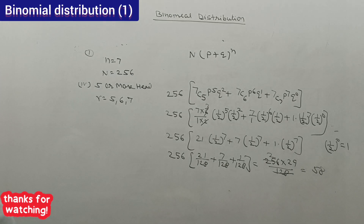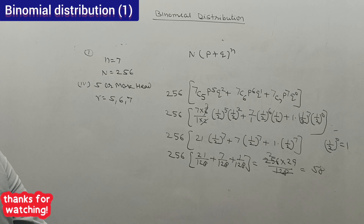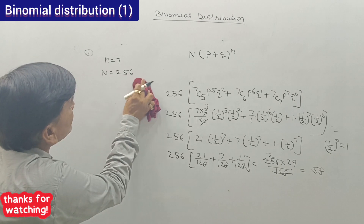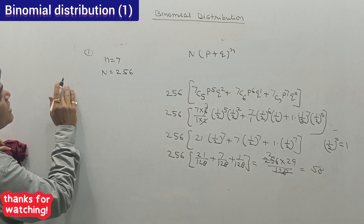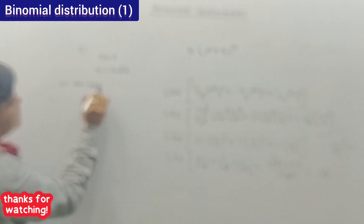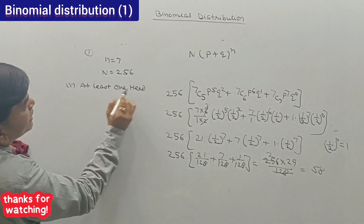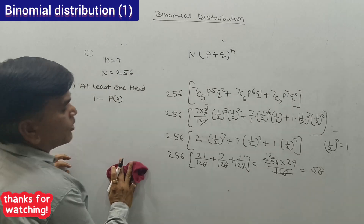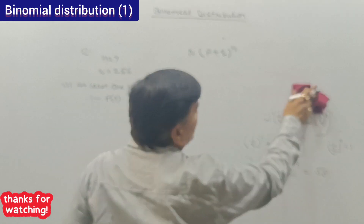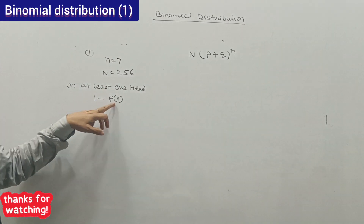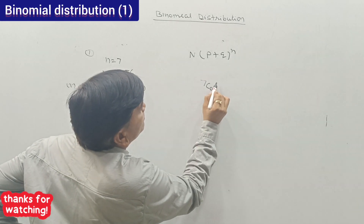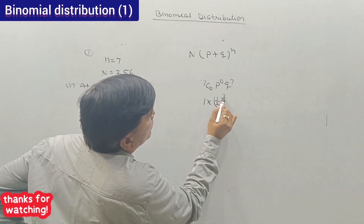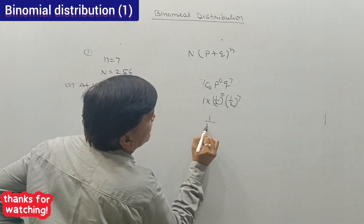In this manner, we can solve binomial distribution questions. Suppose the question asks for at least 1 head — that equals 1 minus the probability of 0 heads. First, we calculate P(0 heads) = 7C0 × p^0 × q^7 = 1 × 1 × (1/2)^7 = 1/128.